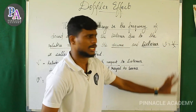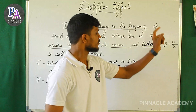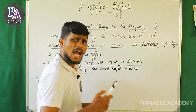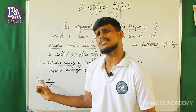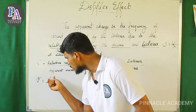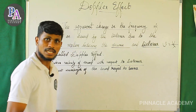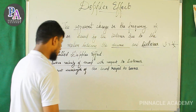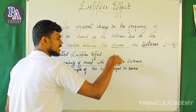We call it new equals V by lambda — V is velocity, new is frequency. The apparent frequency new-dash equals V-dash by lambda-dash, where V-dash is the relative velocity of sound with respect to the listener, divided by the apparent wavelength of sound.